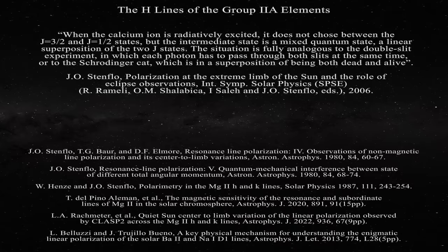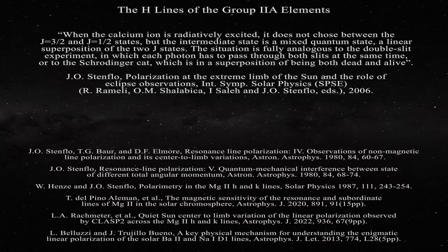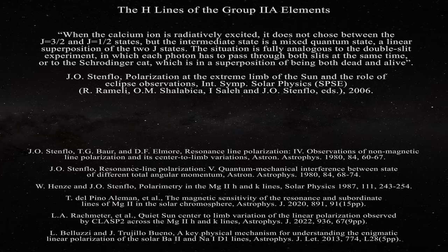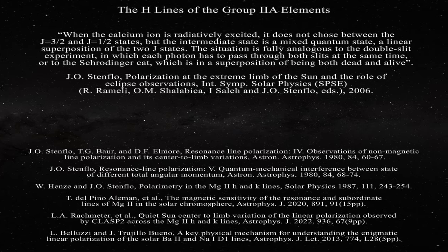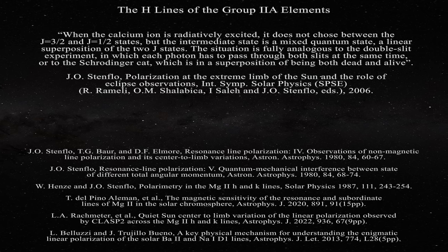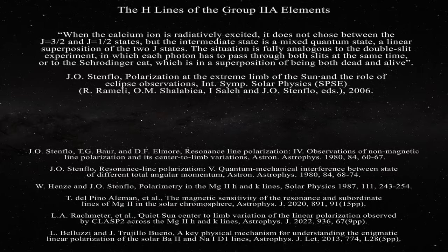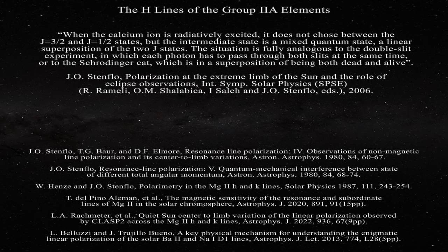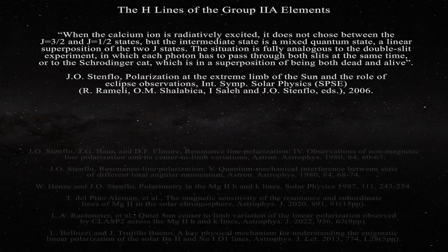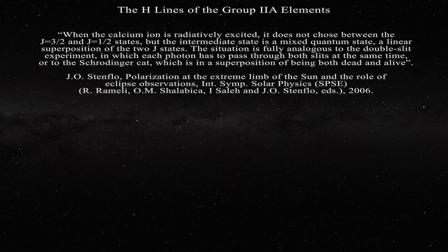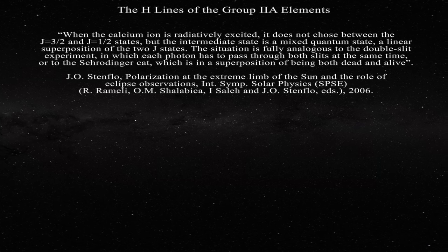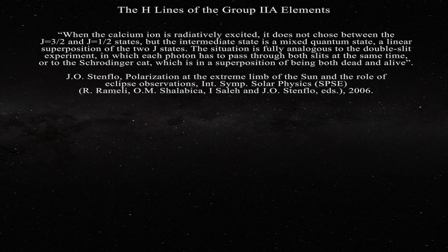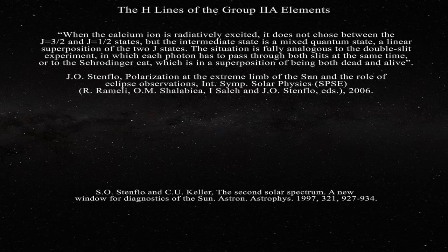Stenflo argues the following. When the calcium ion is radiatively excited, it does not choose between the J equal 3 halves and J equal 1 half states, but the intermediate state is a mixed quantum state, a linear superposition of the two J states. The situation is fully analogous to the double slit experiment, in which each photon has to pass through both slits at the same time, or to the Schrodinger cat, which is a superposition of both dead and alive. This explanation, however, begins to fail for the strontium and barium 2H lines, as the frequencies separating the K and H transitions become much larger, as noted in this paper. As a result, hyperfine splitting in odd isotopes of barium is used to account for the polarization.